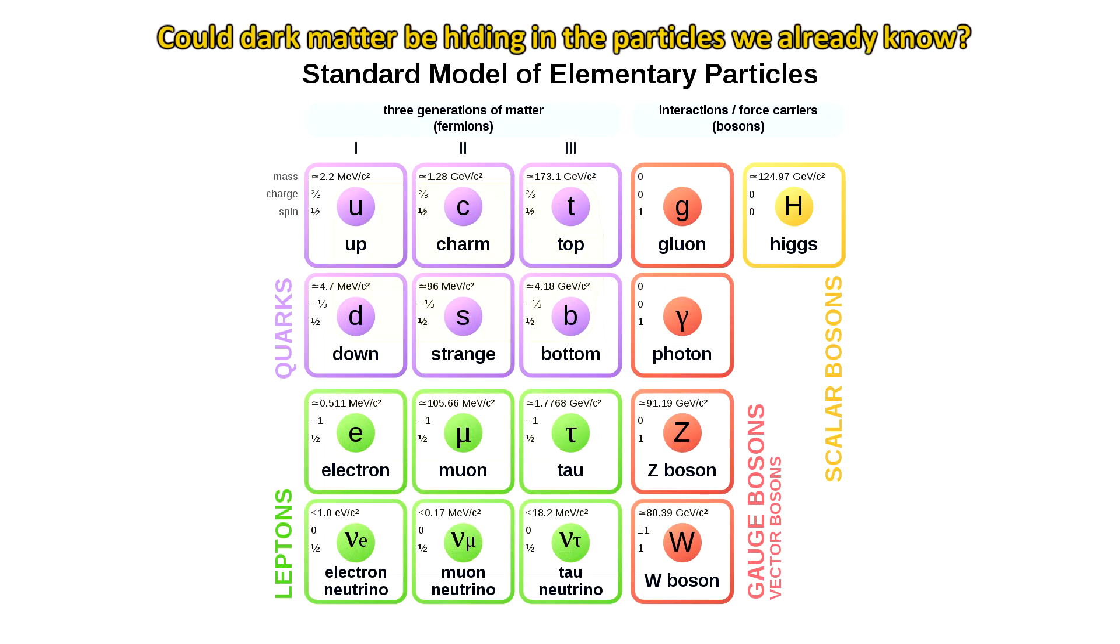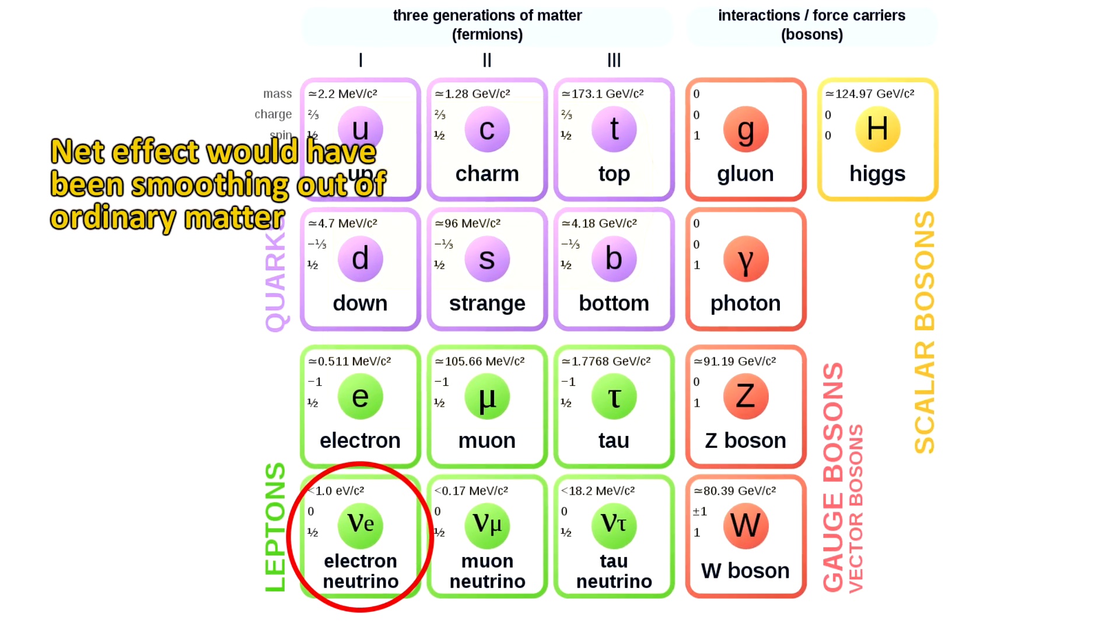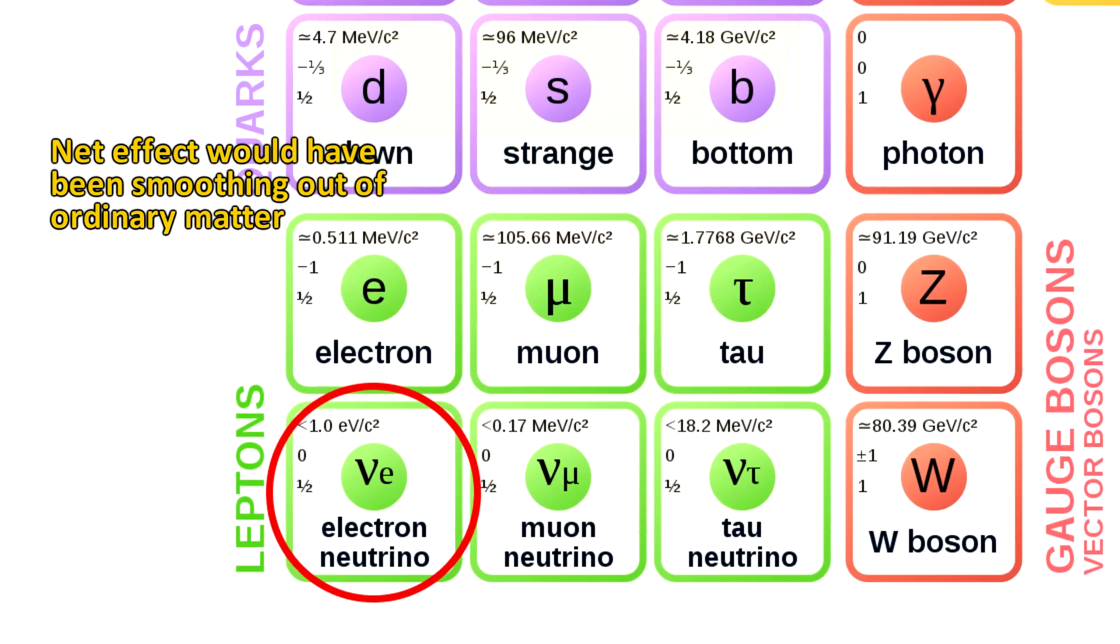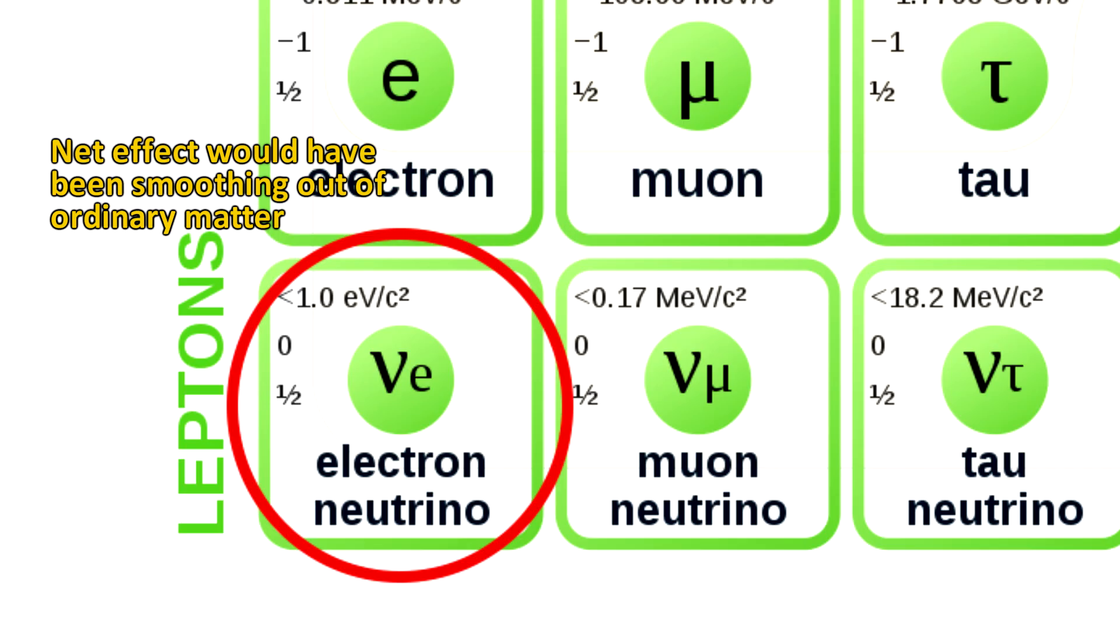If it's a particle, could it be hiding in plain sight in the standard model of particle physics? We need a particle that does not decay and is neutral. The only massive neutral particle in the standard model that is stable is the neutrino. But because neutrinos are so light, they're not cold. They move very fast. So they're like hot dark matter. This would preclude neutrinos from making the large structures in the universe, because the neutrinos would want to move away while the ordinary matter wants to come together. So the net effect would have been a smoothing out of the ordinary matter.